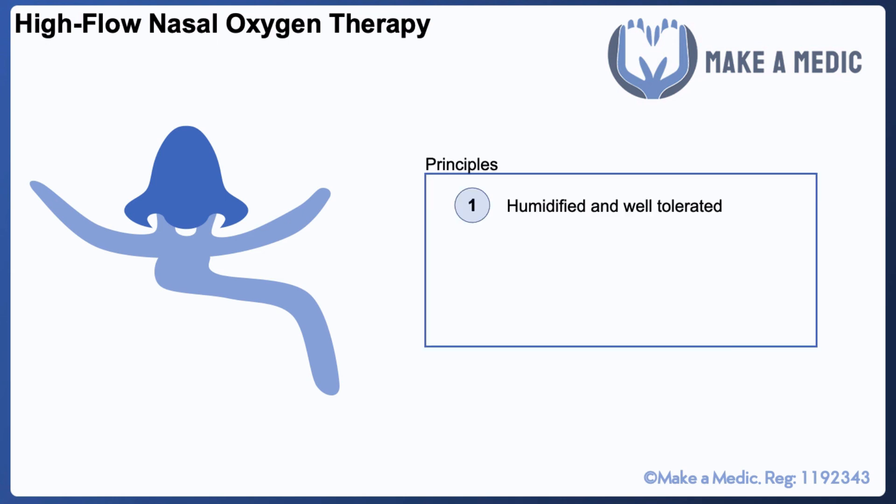First and foremost, it's humidified and hence it's well tolerated, which means that patients can cope quite well with very high flow rates up to about 80 liters per minute. Finally, as with the venturi masks, the airflow will exceed the peak inspiratory flow, meaning that we can very accurately control the fraction of inspired oxygen.